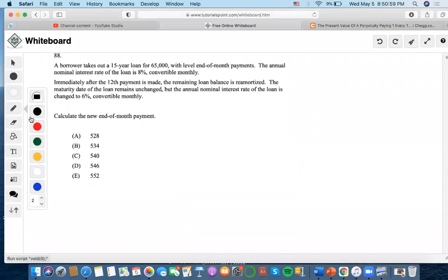Okay, so this one says Bara takes out a 15-year loan for $65,000. So present value concept loan, 15-year loan with level end of the month payments. The annual number is 8% monthly.